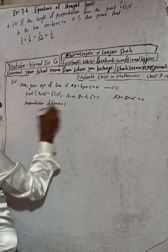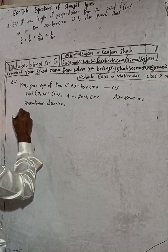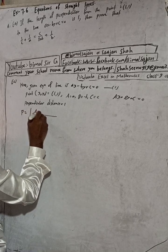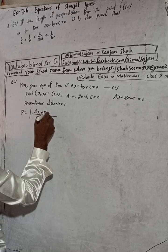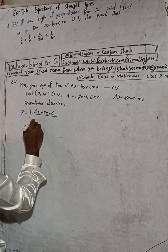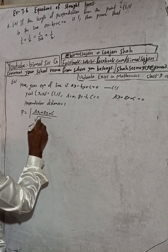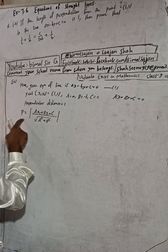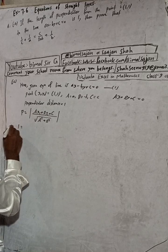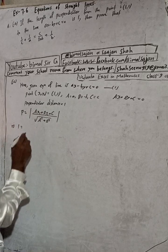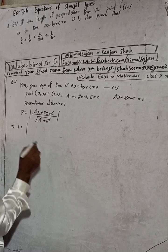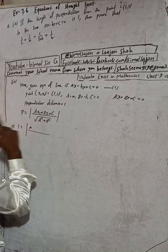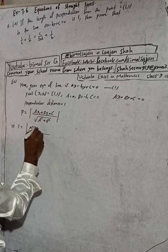So the perpendicular distance p is equal to 1. The formula for perpendicular distance is p equals (Ax₁ plus By₁ plus C) divided by the square root of (A² plus B²). Since p equals 1, we write: 1 is equal to this expression.